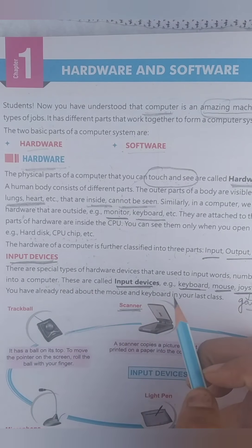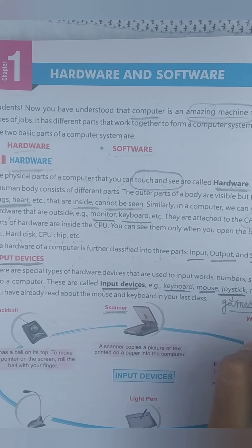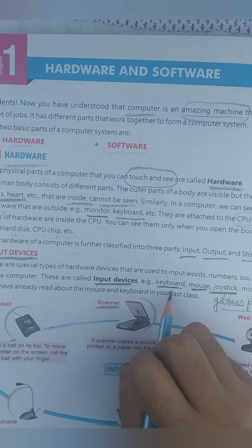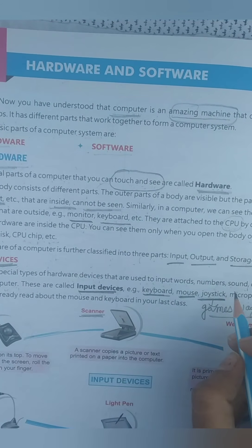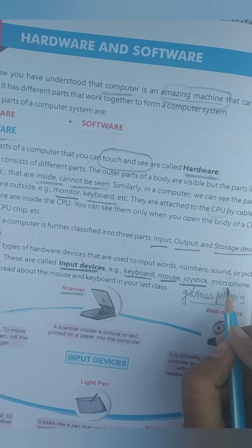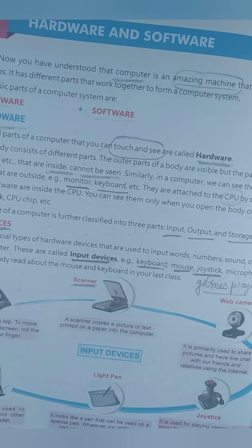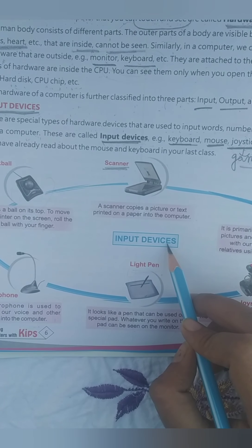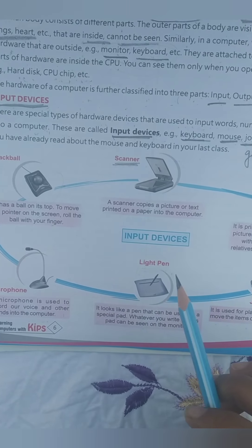Input devices are used to input words, numbers, sound, or pictures into a computer. Examples include: keyboard, mouse, and joystick. This is the diagram of input devices. You know about keyboard and mouse. There are also other types of input devices, like the scanner.